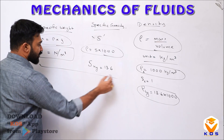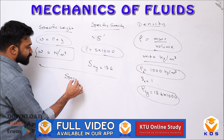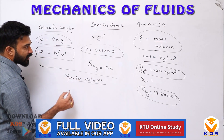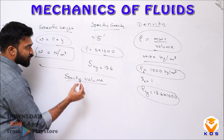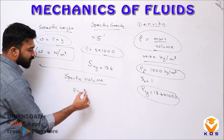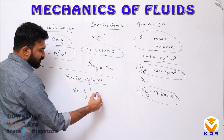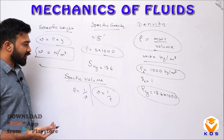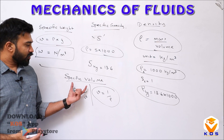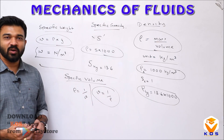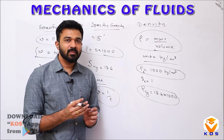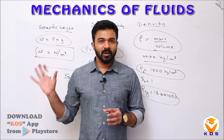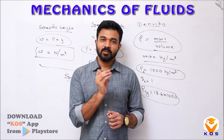Now one more term: specific volume. Specific volume is equal to 1 divided by density. This covers the fundamentals of fluid mechanics, which is the topic covered in smaller classes.